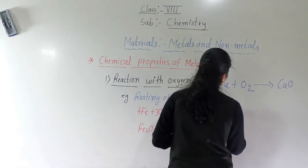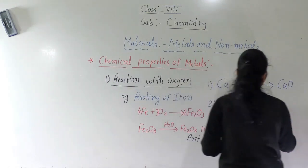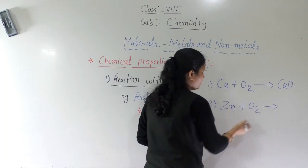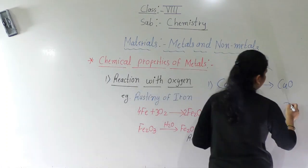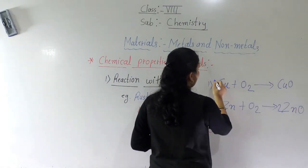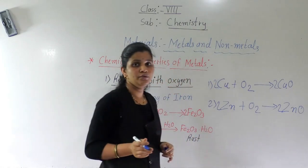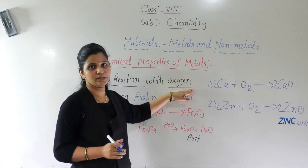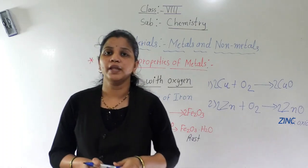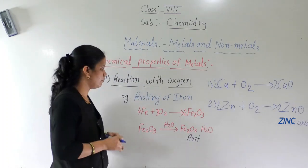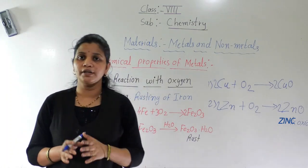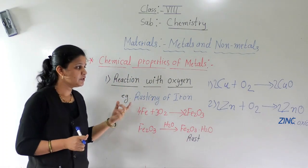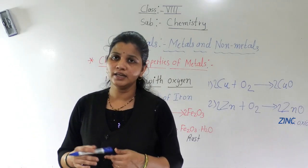One more example: zinc. Zinc reacts with oxygen — which oxide will form? It will be zinc oxide. Zinc symbol is Zn. Zn + O₂ forms zinc oxide. So, whenever metals react with oxygen, they form metal oxides. This is the first chemical property — reaction with oxygen. The next chemical property we will learn in the next lecture.